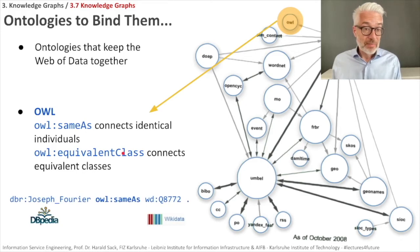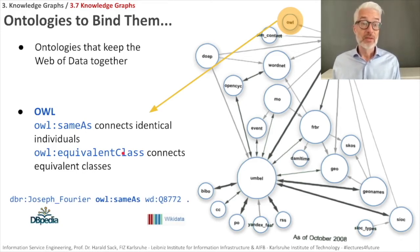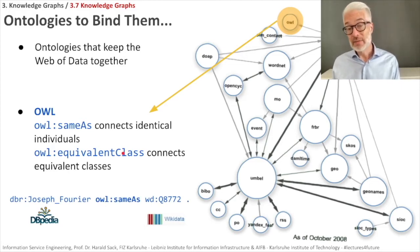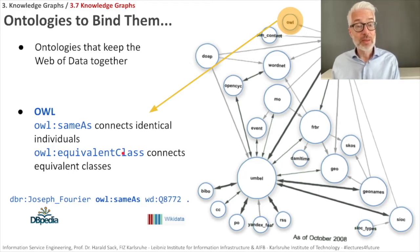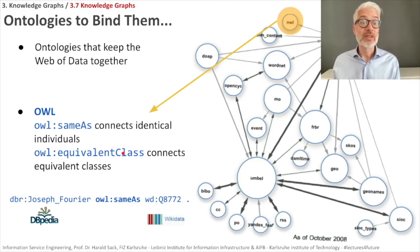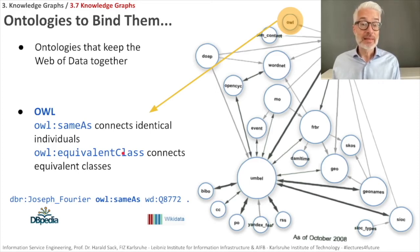A simple example: Joseph Fourier. If you want to indicate that Joseph Fourier in DBpedia is the same Joseph Fourier in Wikidata — where the URI is Q8772 — you simply put the property OWL sameAs between them. So the triple is: DBR Joseph_Fourier, OWL sameAs, WD Q8772 in Wikidata.